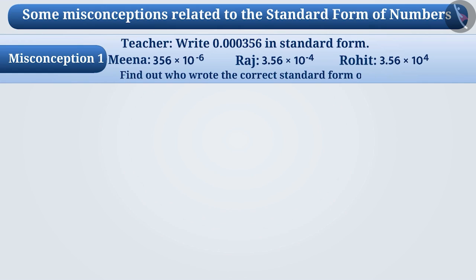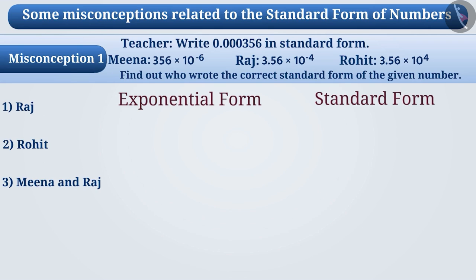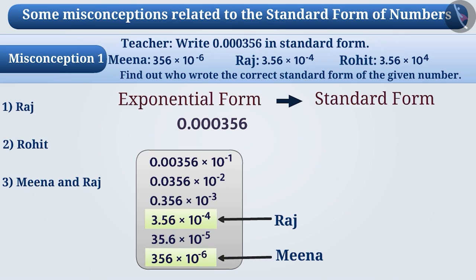Find out who wrote the number correctly in standard form. Some children are not able to understand the difference between the exponential form and the standard form of a number. They think that the exponential form is the standard form. Since Meena's and Raj's answers both appear in exponential form, they think option 3 is correct. But since not every exponential form is the standard form, option 3 is an incorrect answer.